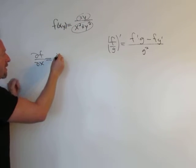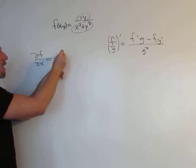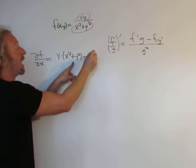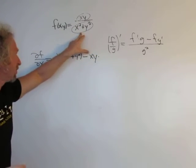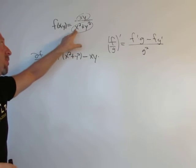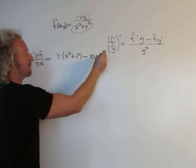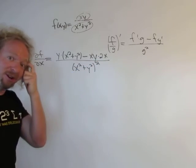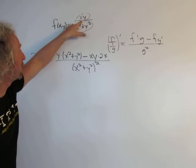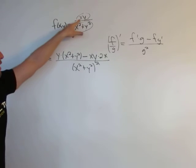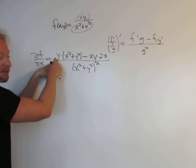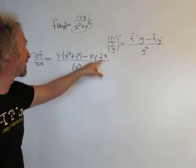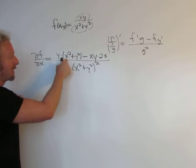The derivative of xy with respect to x is y — that's the derivative of the first times the second, so far so good. Minus the first, which is just xy, times the derivative of the second. Since we're differentiating with respect to x, the derivative of y² is 0, so we're left with 2x, all over the second piece squared. Let's check: derivative of the first with respect to x is 1, y hangs out, times the second, minus the first times this derivative — but this derivative of y² is 0, giving 2x.